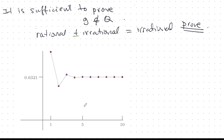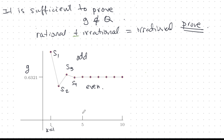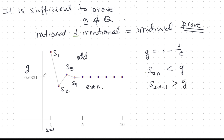G is equal to 1 minus 1 over e. Let's plot the partial sums of G. Now S1 starts at k equals 1. The odd partial sums — those with an odd number of terms — are above G, and the even partial sums S2, S4, and so on are below G. We proved all of that in the previous alternating series videos.